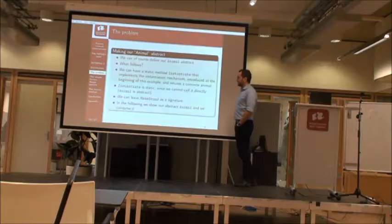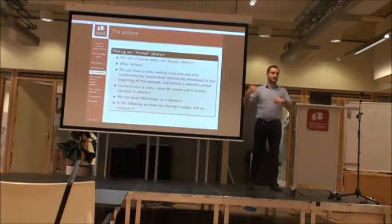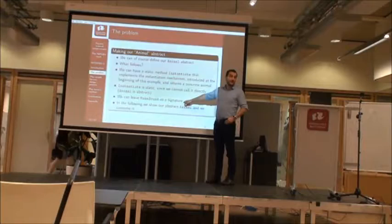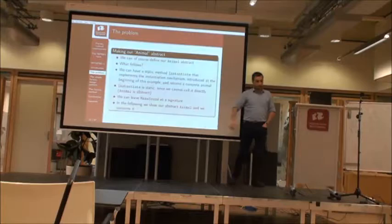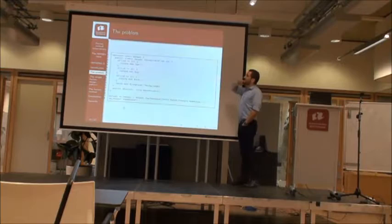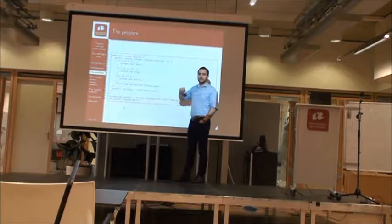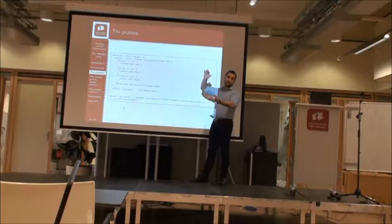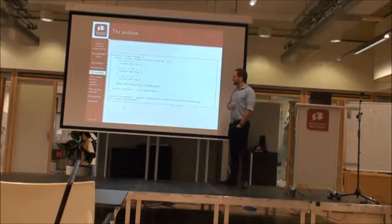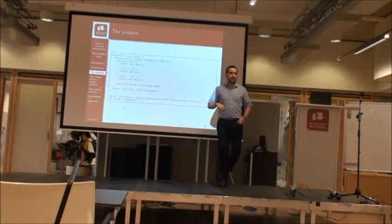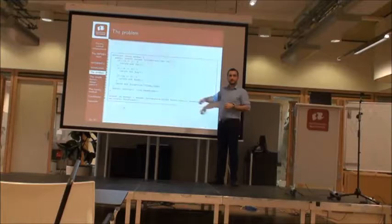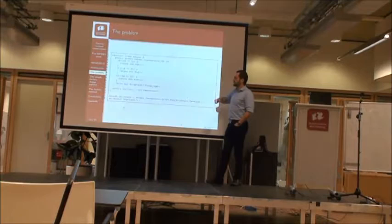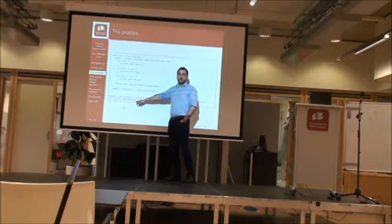We leave 'makeSound' as abstract so whoever extends Animal must provide a 'makeSound' body. Here is the example: Animal is now abstract, it defines the static function 'instantiate' with a switch — one entry point all clients can use to instantiate animals. You leave 'makeSound' abstract, forcing implementors to provide it. Now to use it: you call 'Animal.instantiate(someNumber)', get back an Animal, and then call 'makeSound' on it.